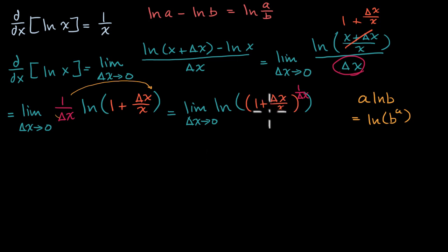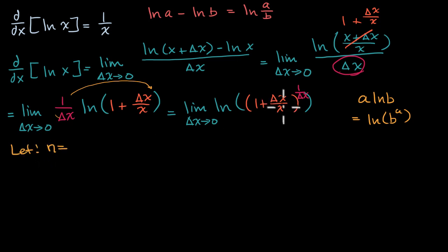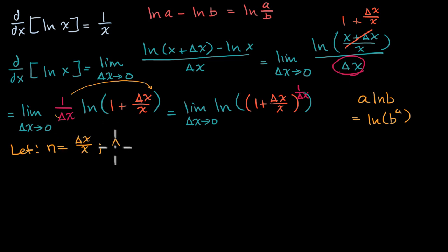Now this might start to look familiar to you — it might start to look close to the definition of e, and we are indeed getting close to that. In order to get there fully, I'm going to do a change of variable. Let's let n equal delta x over x. Well in that case, if you multiply both sides by x, you get delta x is equal to nx.